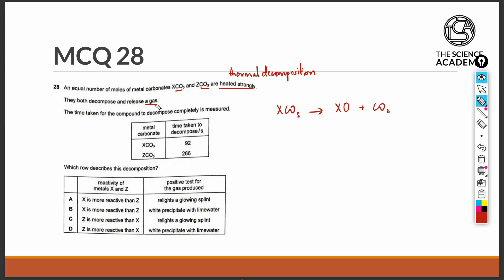The gas that is released in this question is therefore the carbon dioxide gas. The time taken to decompose for each of the metal carbonates is given, 92 seconds for the X and 266 seconds for the Z carbonate. The shorter the time taken to decompose, it means the easier the thermal decomposition.